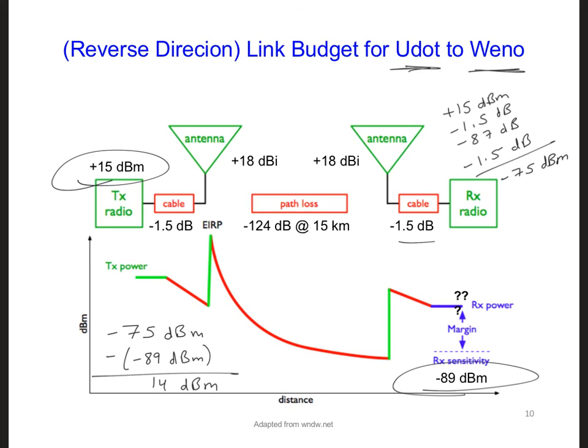Take out your in-class project notebooks and make a note about link budgets, the Friis transmission formula, and whether we have viable links from both Ueno to U-dot and U-dot to Ueno.